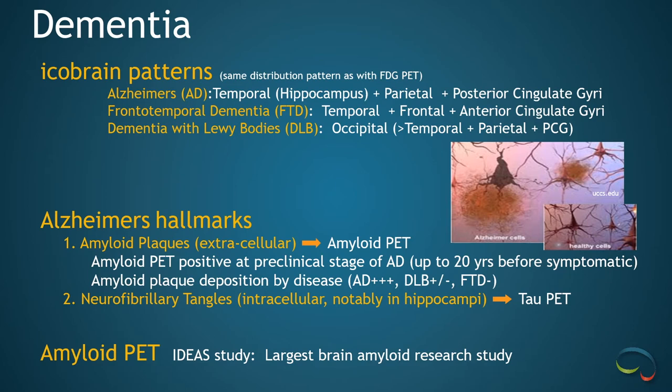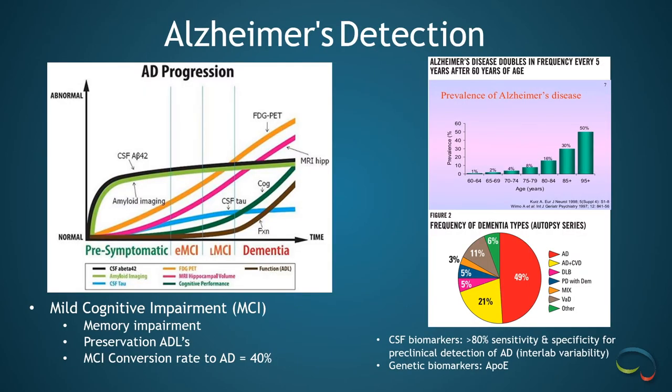The IDEAS trial launched in 2016 and was the largest brain amyloid research study to date, with 16,000 patients, over 500 imaging centers, and $100 million, led by the Alzheimer's Association and funded by Medicare and ACR. Three different FDA-approved amyloid tracers were administered: Amivid, Visamil, and Neuraceq. It turns out that the results of the amyloid PET studies impacted management in two-thirds of patients and changed the diagnosis in more than one-third of patients. However, unfortunately, amyloid PET is still not covered by insurance at this point in time.